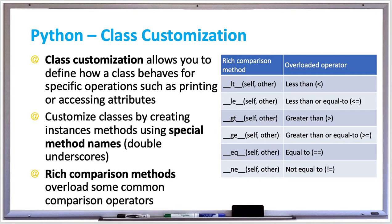There are also rich comparison methods which overload common comparison operators. The table on the right shows examples: double underscore LT for less than, LE for less than or equal to, GT for greater than, GE for greater than or equal to, EQ for equal to, and NE for not equal to. These rich comparison methods allow you to customize the way these operators work.